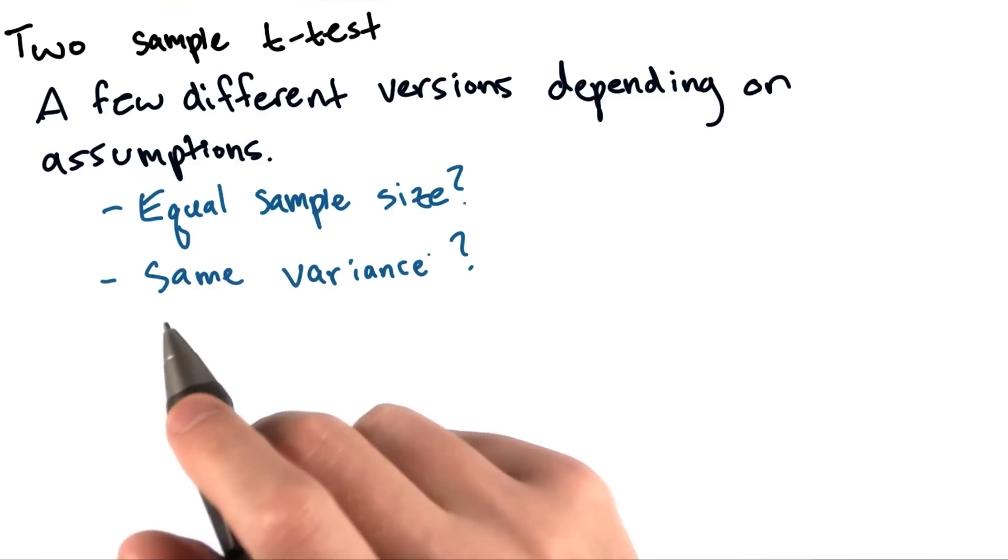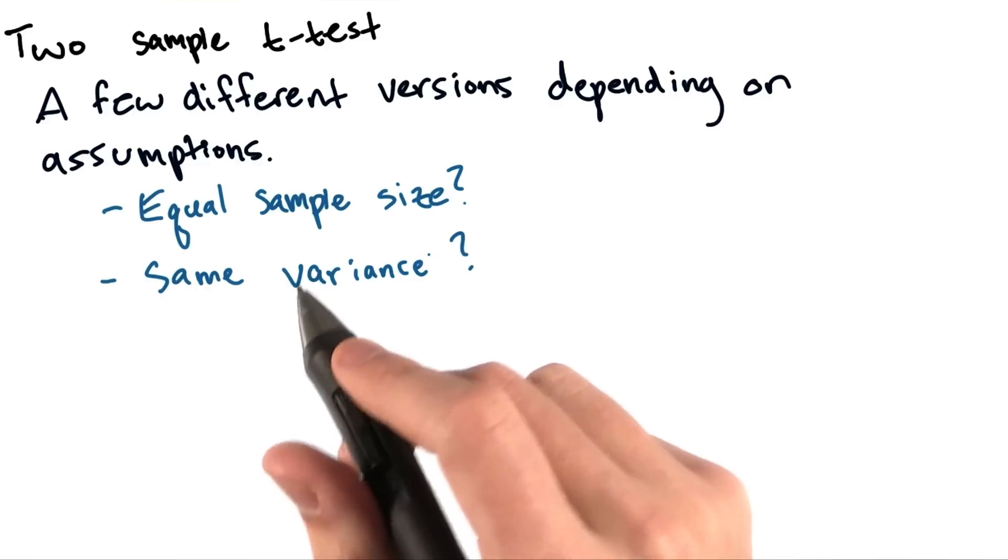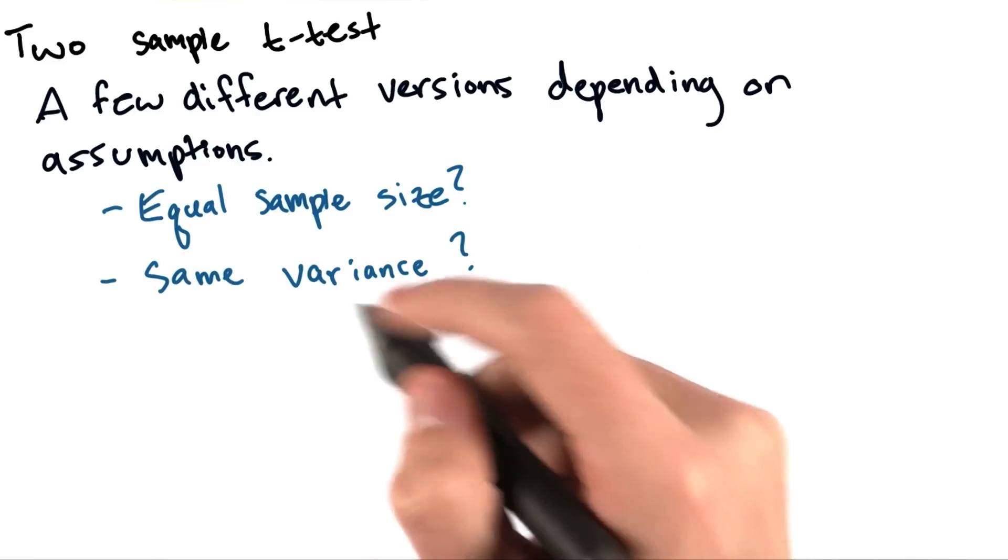Let's discuss a variant of the t-test called Welch's t-test in more depth, since it's the most general. It doesn't assume equal sample size or equal variance.